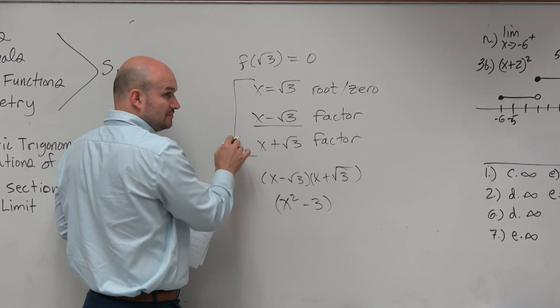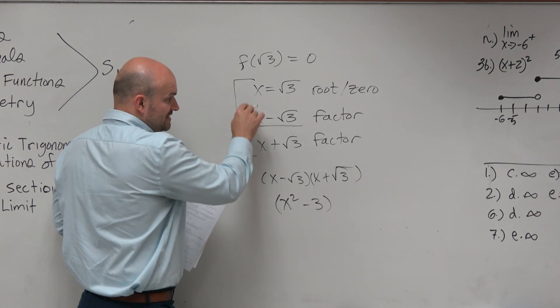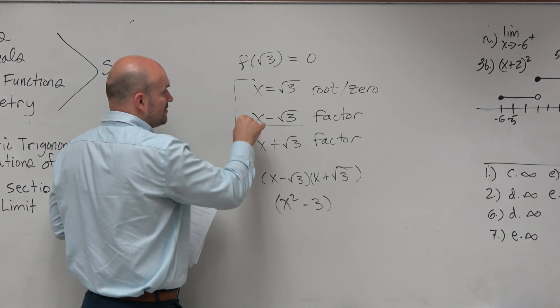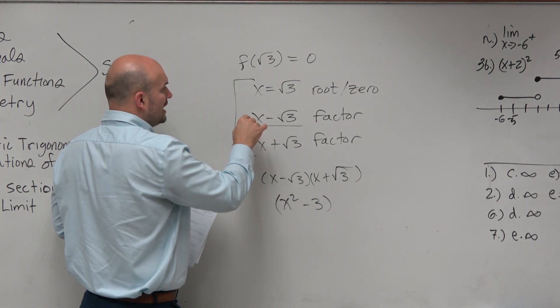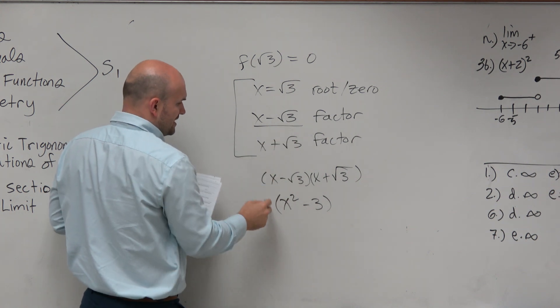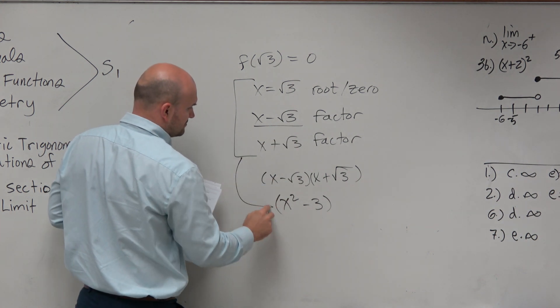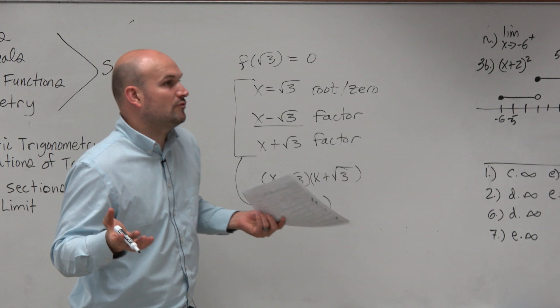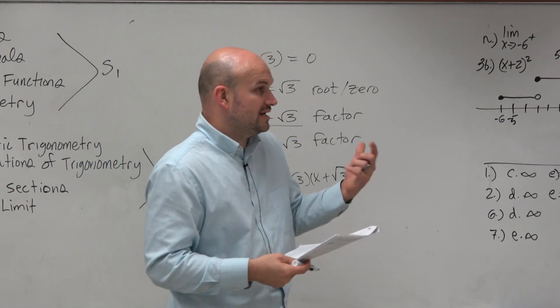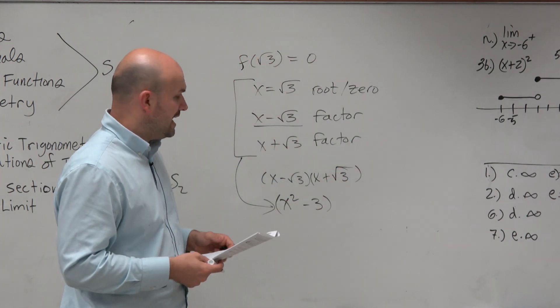Now, if we multiply these two, if these two are factors and these two are factors, then obviously when we multiply them, that also gives us a factor. It could be a factor of 1, but it also gives us a factor.